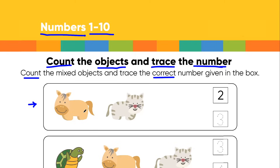Here we got two animals. The first animal is the pony and the second animal is the cat. So this is animal number one and this is animal number two — these are two in number. In front of it you can see that this box contains number two and this box contains number three. Number two is the correct answer and number three is the wrong answer, since we have two animals on the left side, and that is why only number two is traced.